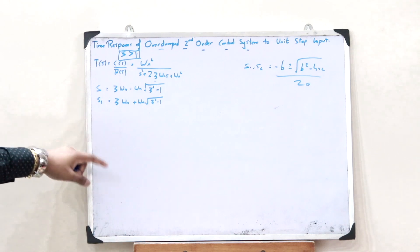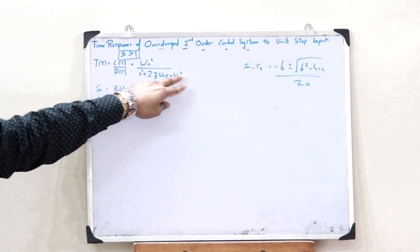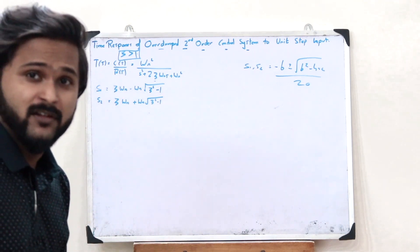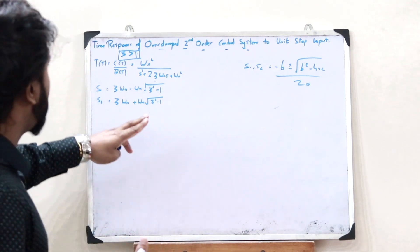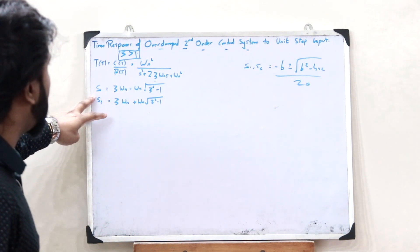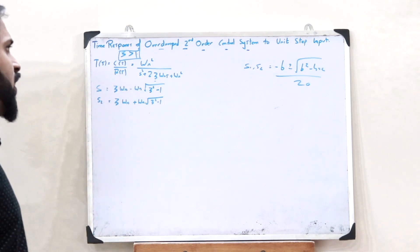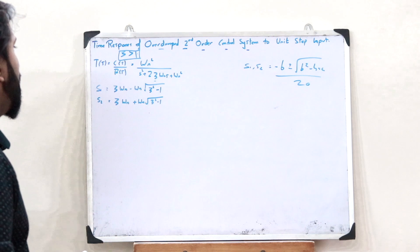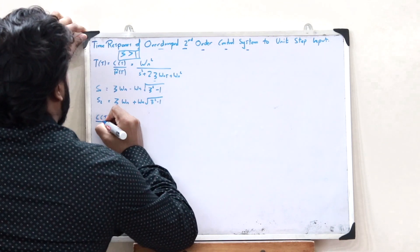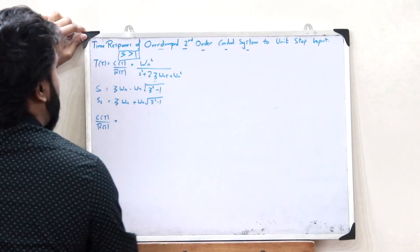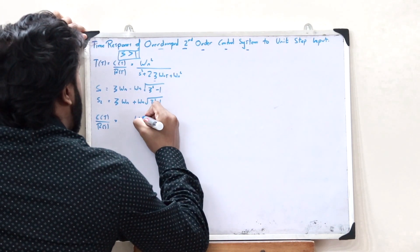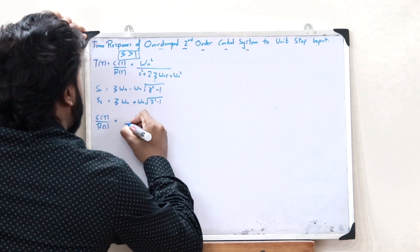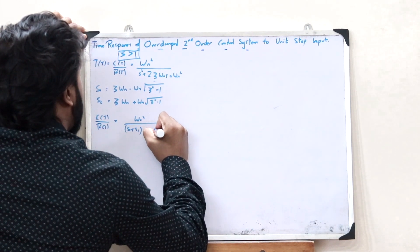In 9th standard mathematics, we learned that if we have two roots S1 and S2, the quadratic can be written as (S + S1)(S + S2). Therefore, the transfer function C(S)/R(S) becomes omega_N squared divided by (S + S1)(S + S2).